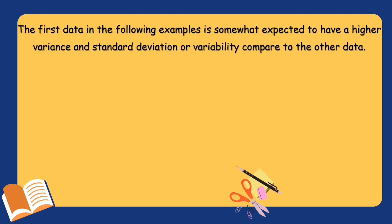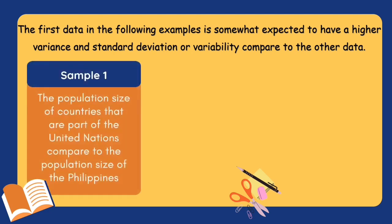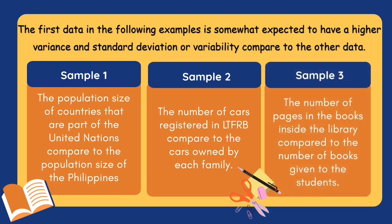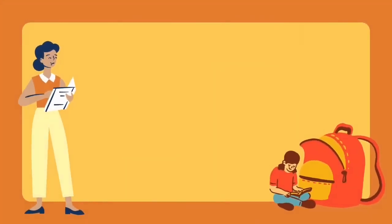The first data in the following examples is expected to have higher variance and standard deviation compared to the other data. Sample 1: The population size of countries that are part of the United Nations compared to the population size of the Philippines. Sample 2: The number of cars registered in LTFRB compared to the cars owned by each family. Sample 3: The number of pages in books inside the library compared to the number of books given to students. The mean, variance, and standard deviation are important in statistics because they serve as the basis for other types of statistical calculations or statistical tests.